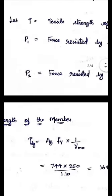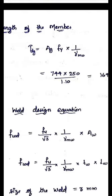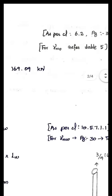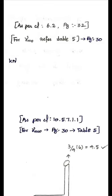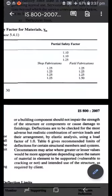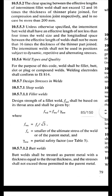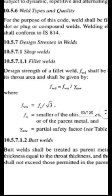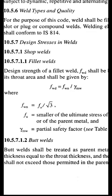To calculate the strength of the weld for 1 mm length, use the weld design equation: FWD = FU / √3 × (1/γmw) × Aw. This equation is from IS 800 clause 10.5.7.1.1, page 179. The area of the weld, Aw, is obtained by multiplying the length of the weld and the throat thickness. Since we want strength per 1 mm length, we set the length as 1. TW is the throat thickness.